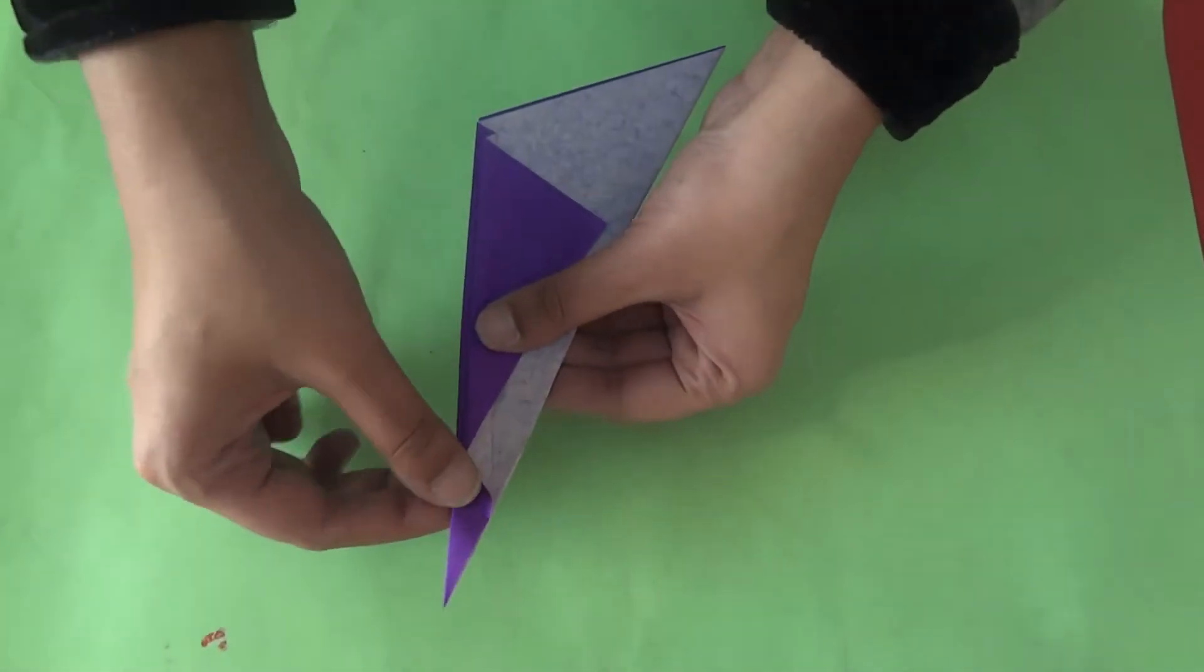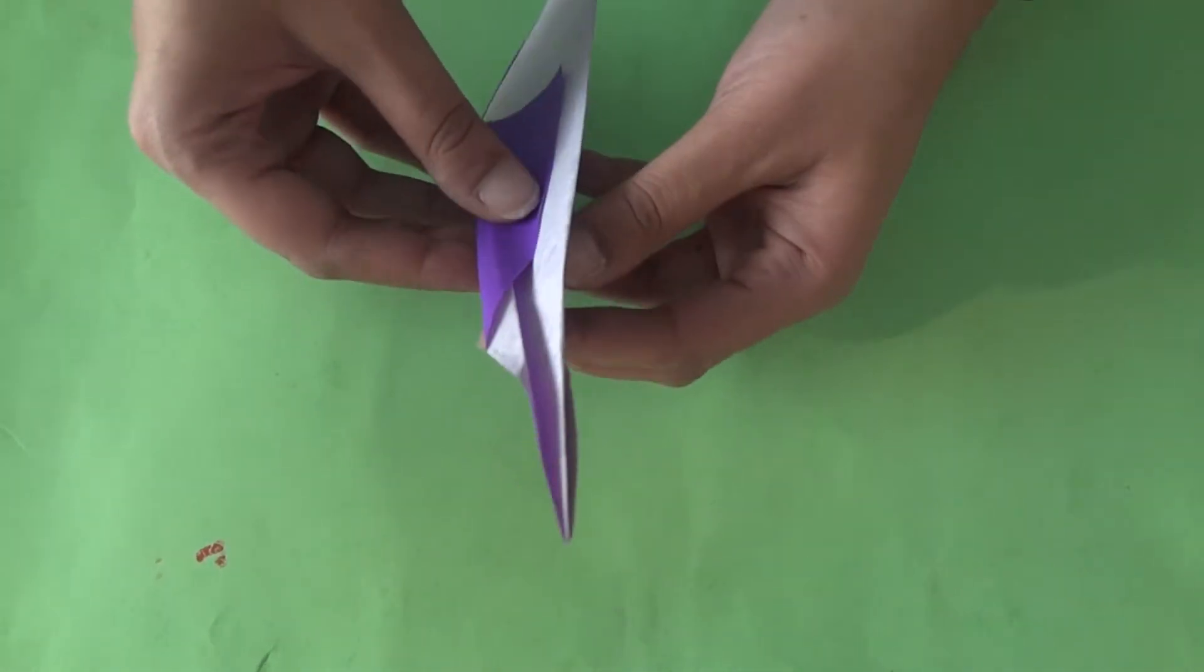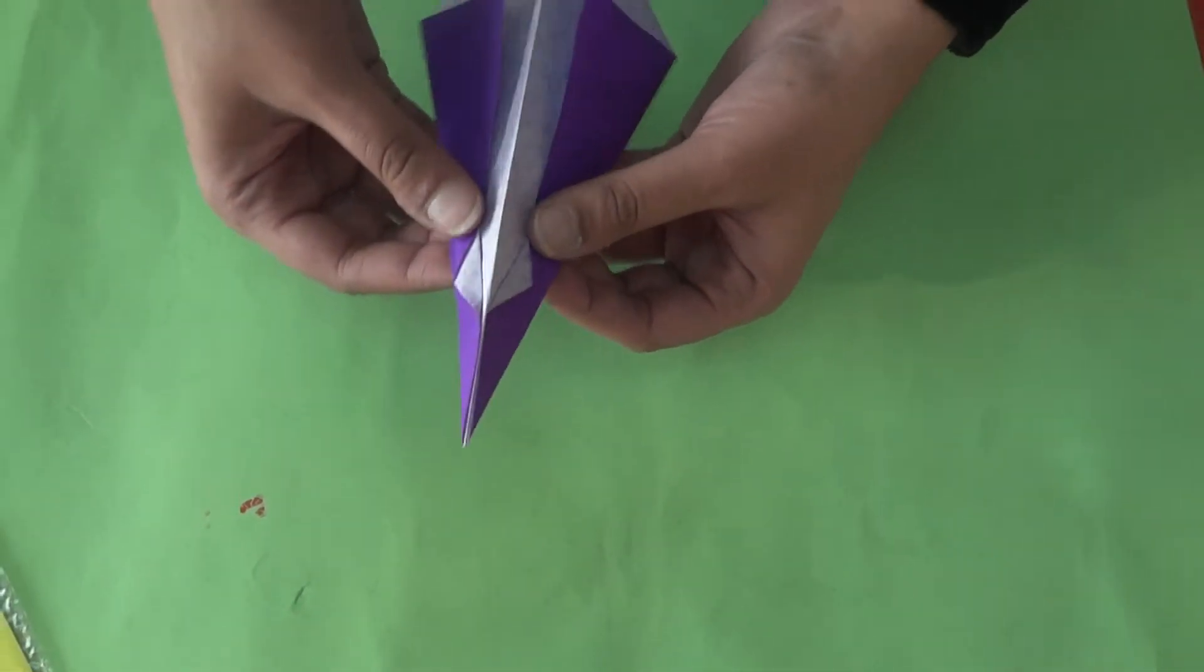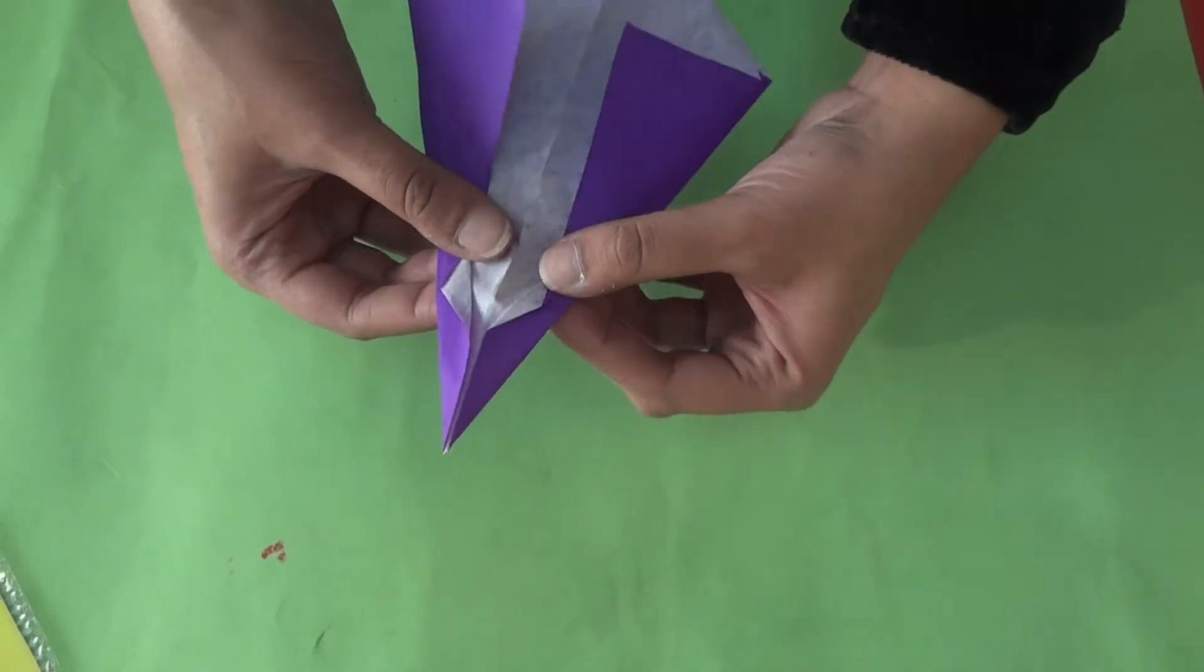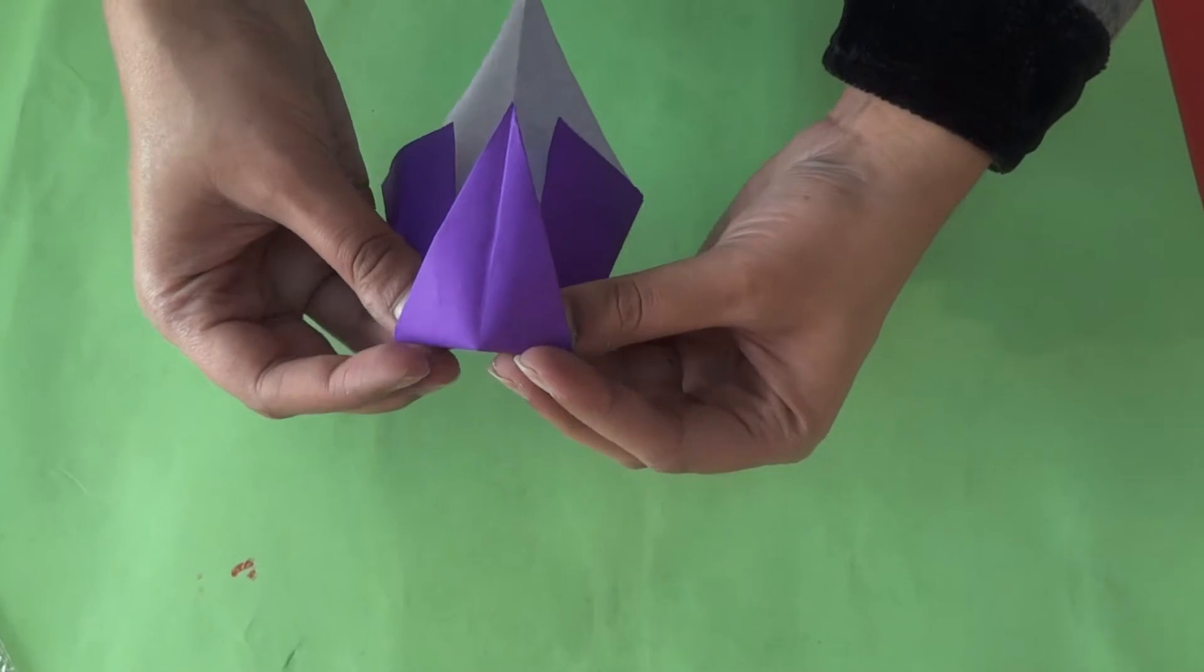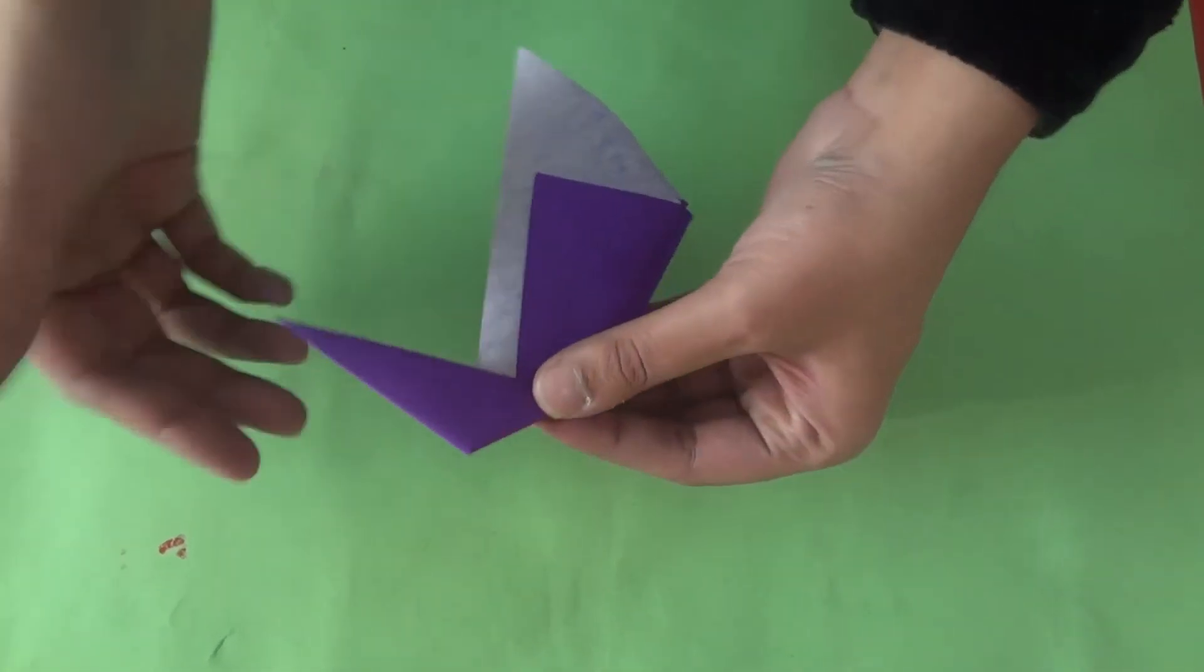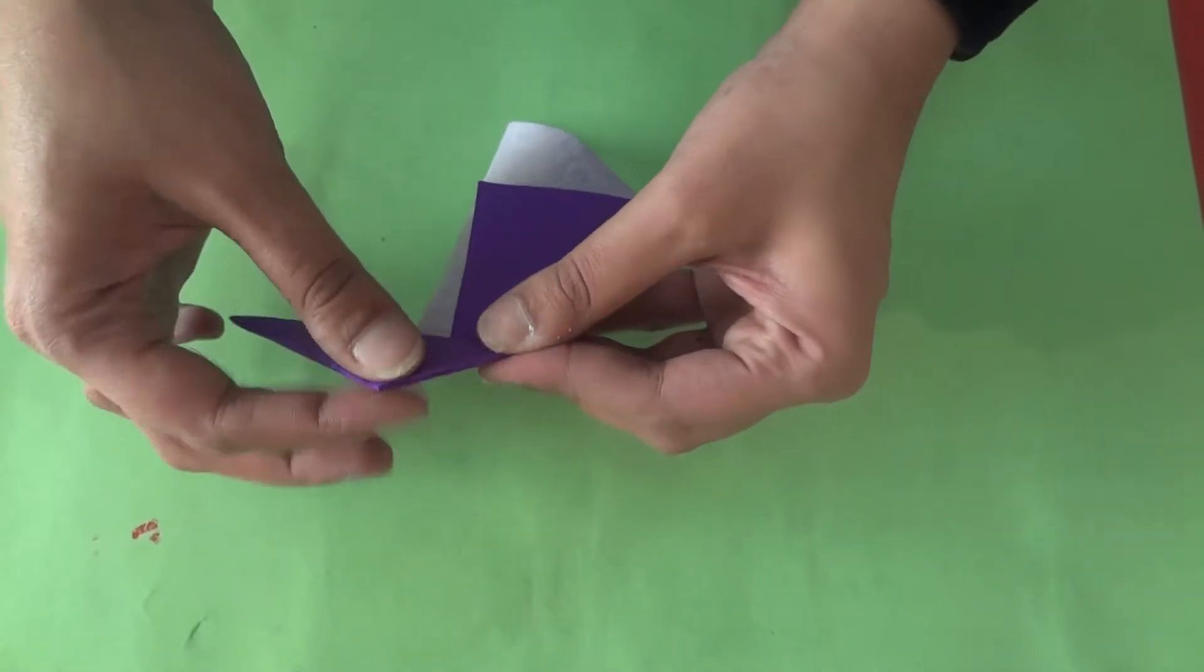Now you have to make a hood fold on the top corner. How to make the hood fold? You open it up and fold this. Simultaneously, you fold it back. And you will get this hood fold.